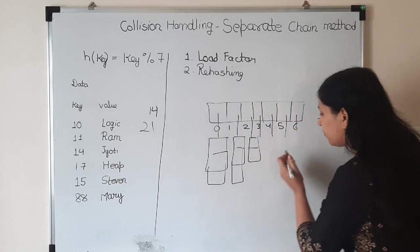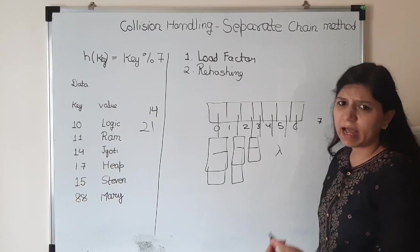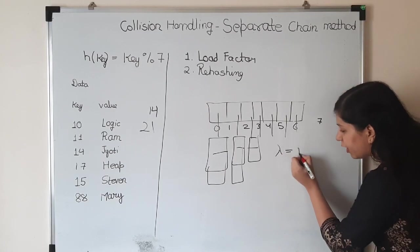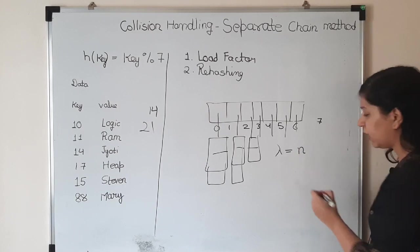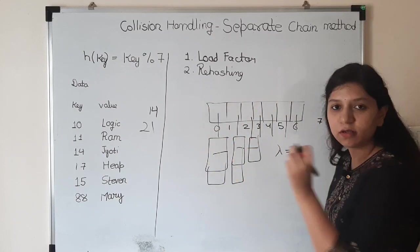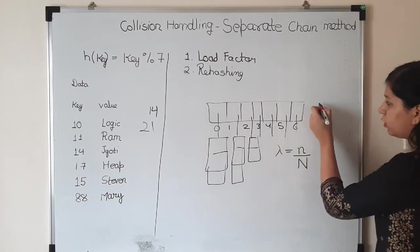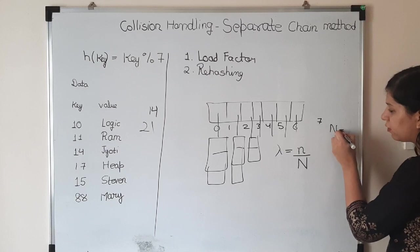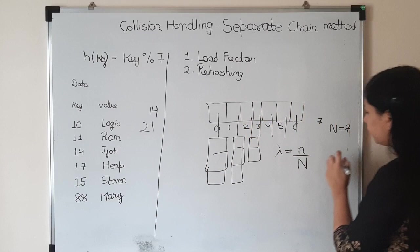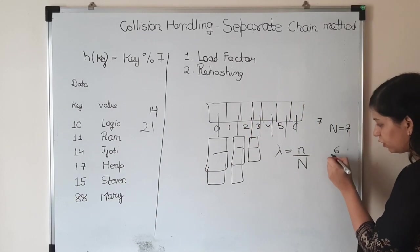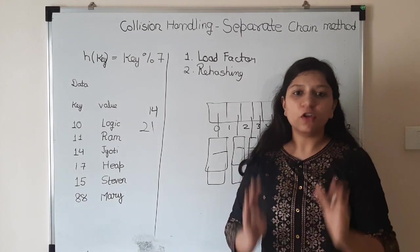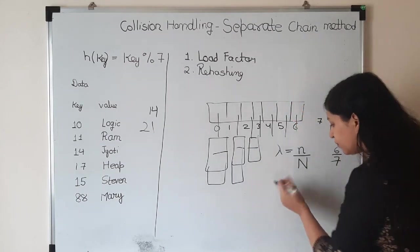The general rule we follow is that at each place there must be only one value. The load factor, denoted by lambda, is the ratio of input size to hash table capacity. I'm denoting it as n divided by 7.